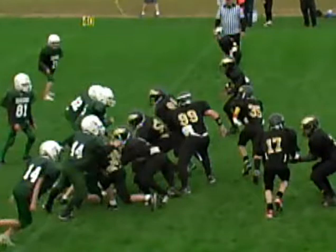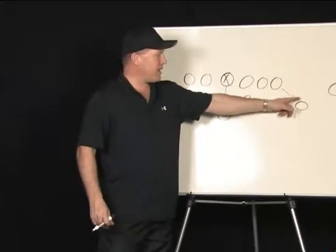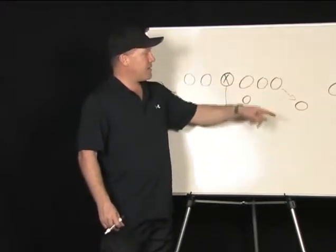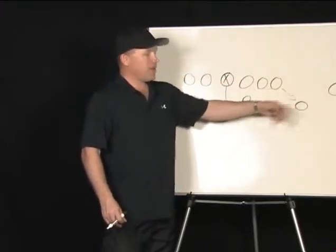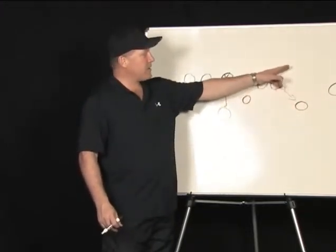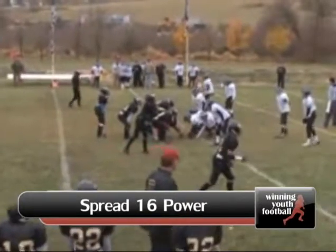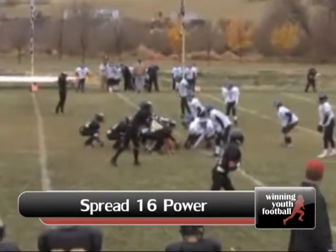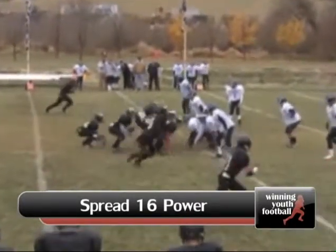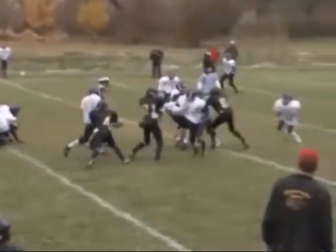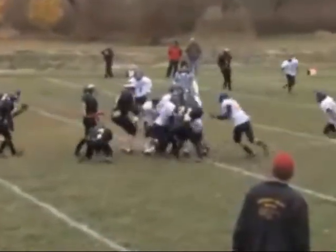We vary the splits based on these players' ability. If this player can get to the edge here and seal off this end, we'll take him out wider. But if he's not very athletic and this guy is athletic, we'd have to bring him in tighter. Same thing when we're running 47 — this split will vary based on this guy's athleticism and how good a player that is.